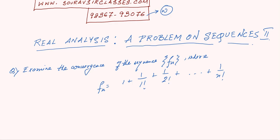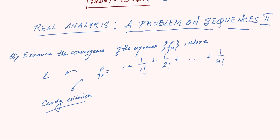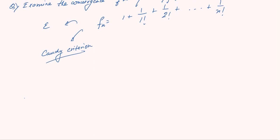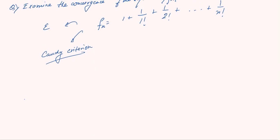Can we prove this by the epsilon definition? Maybe we can, maybe we can't, but we know for sure that we can prove this by Cauchy's criteria. We do not want to get our hands dirty into the epsilon definition — of course we can, but it will be very complicated and very lengthy. So we'll be solving this by Cauchy's criteria. We assume n is greater than or equal to m.